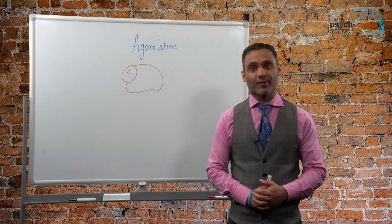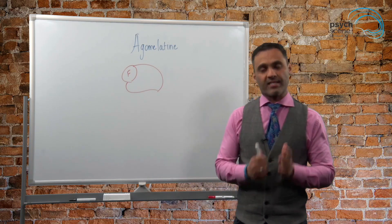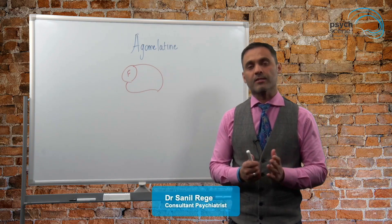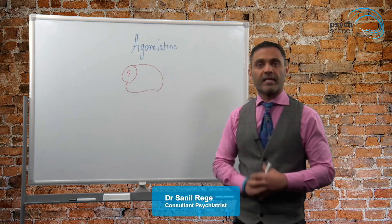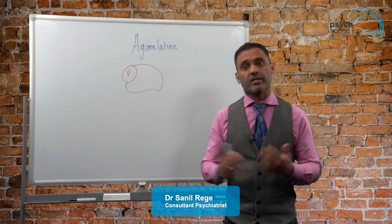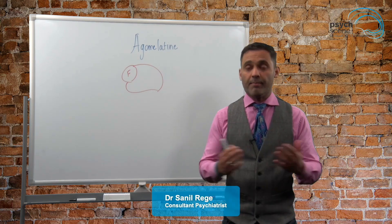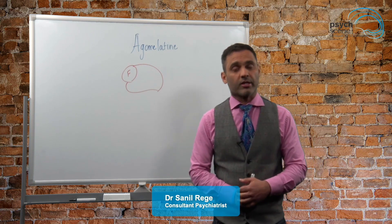Hi everyone, welcome to HubBytes. I'm Sunil Rege, Consultant Psychiatrist. Today I'm going to take you through a novel antidepressant called Agomelotine. Now Agomelotine may not be available in all countries. It comes under the trade name Valdoxan in Australia. It might be known by some other names in other countries.